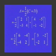So I got 3, negative 2 in the first row, negative 2, 1 in the second. That's my A matrix.